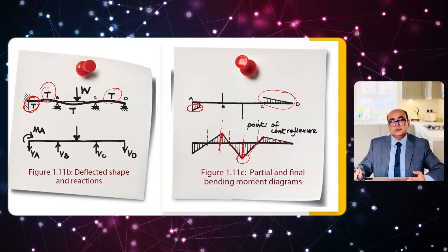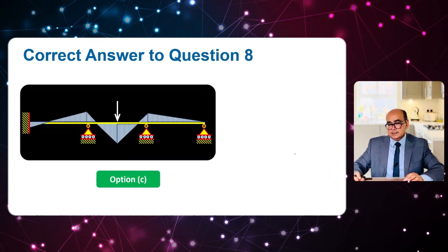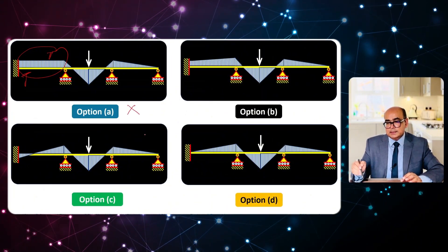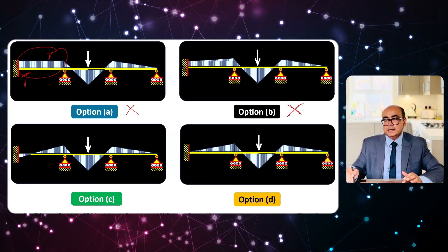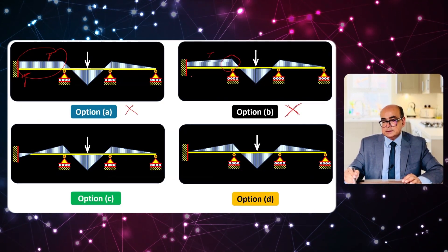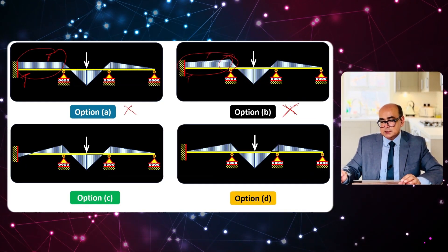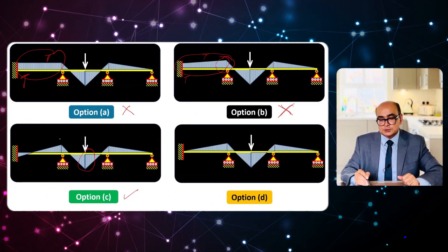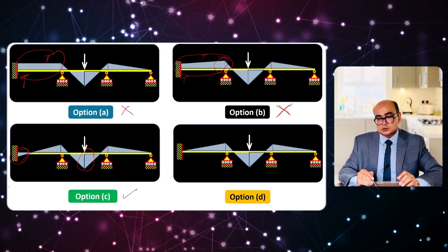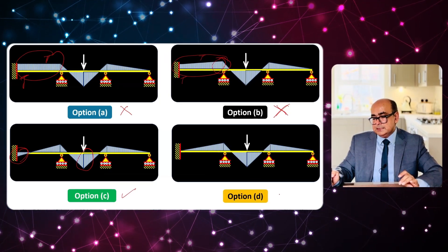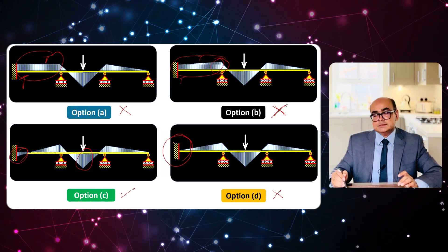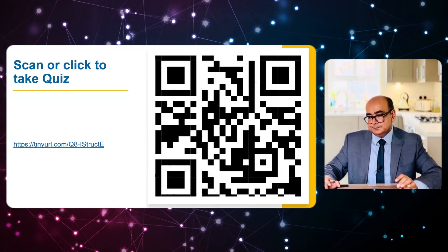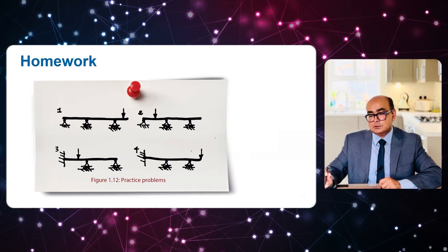The correct option is C. Option A is incorrect because the moment must change direction at the point where tension shifts from top to bottom. Option B is incorrect because the direction change is missing. Option C is correct — under the load there is sagging, at the supports there is hogging, and the resisting moment causes downward bending. Option D is incorrect because a fixed support always has a resisting moment, so the bending moment cannot be zero there.